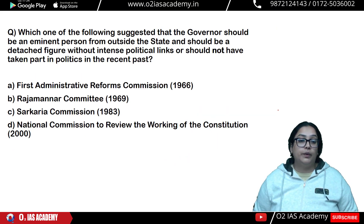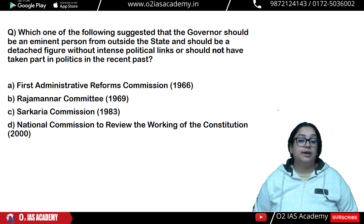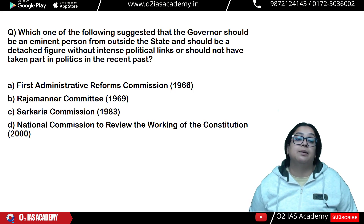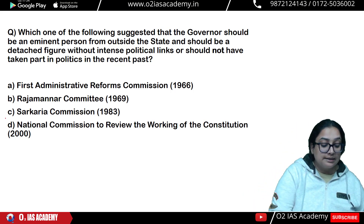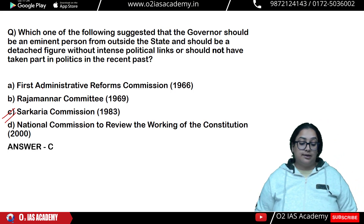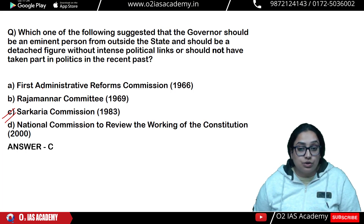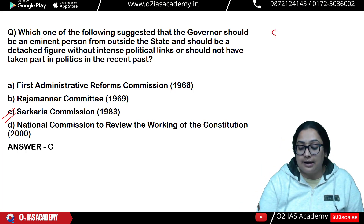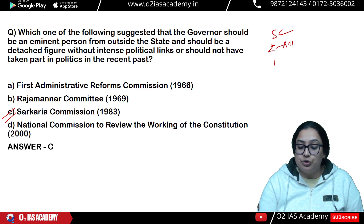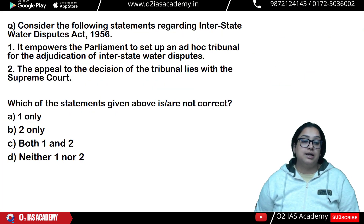Next question: Which commission suggested that the governor should be an eminent person from outside the state, a detached figure without intense political links, who should not have taken part in politics in the recent past? The answer is the Sarkaria Commission. You should also keep in mind the First Administrative Reform Commission, the Rajmannar Committee, Second ARC Report, and Punchhi Commission — their provisions and conventions should be remembered.